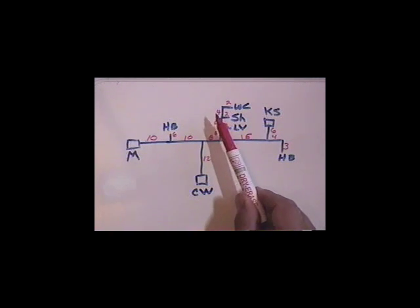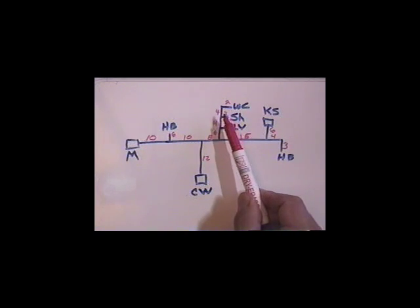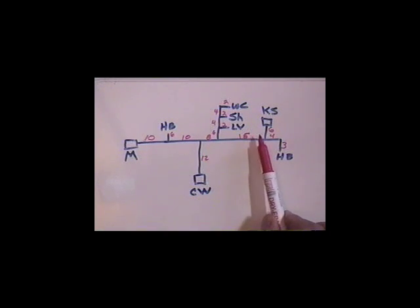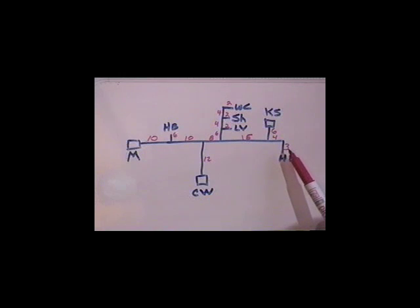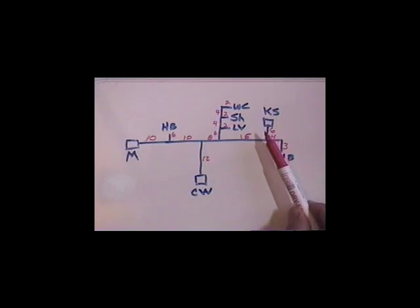Then 2 foot branch to the lav, then 4 foot, then 4 foot, then 2 foot to the water closet, 2 foot to the shower, then 15 feet over to the kitchen sink, 4 foot, 3 feet out to the hose bib, and 6 feet up to the kitchen sink.